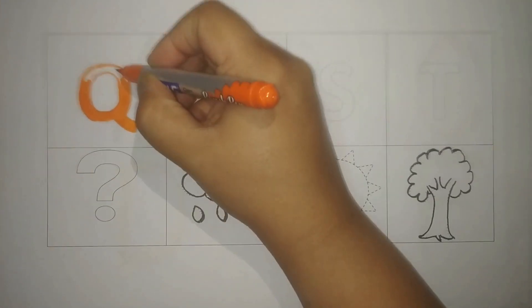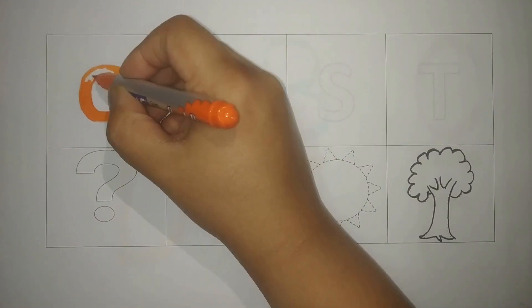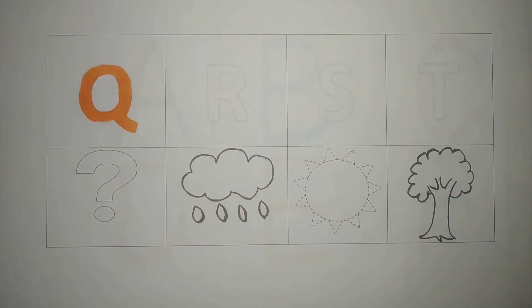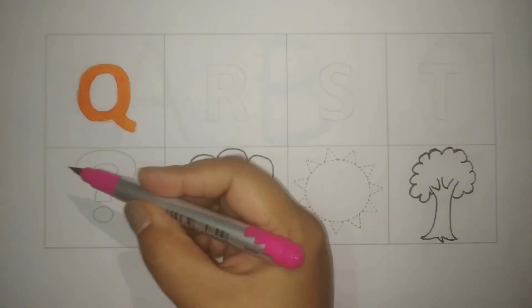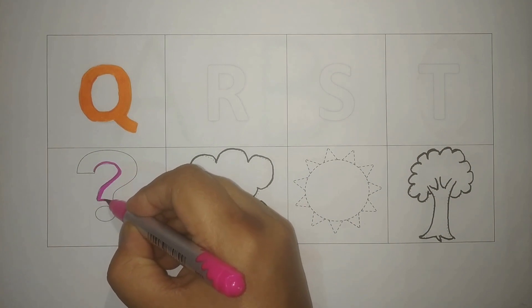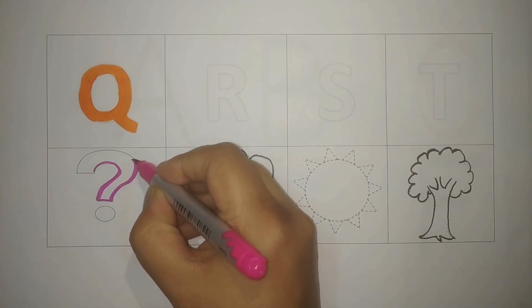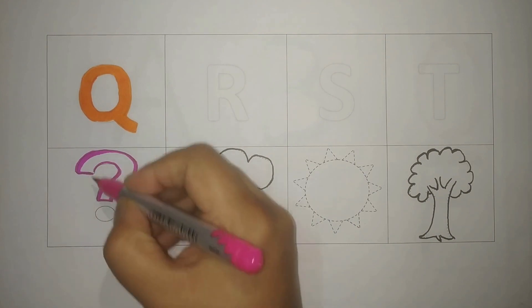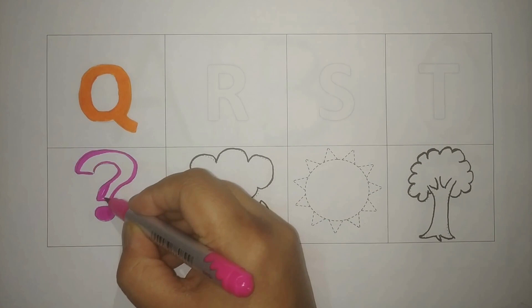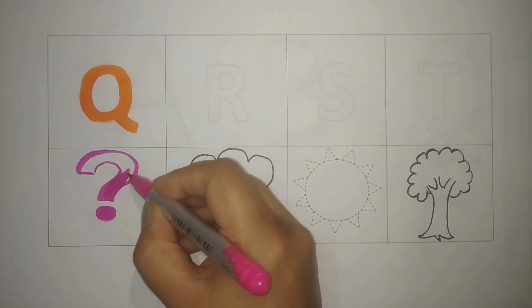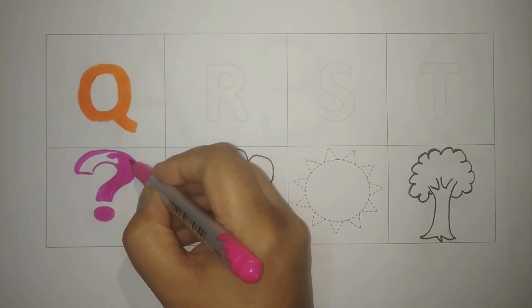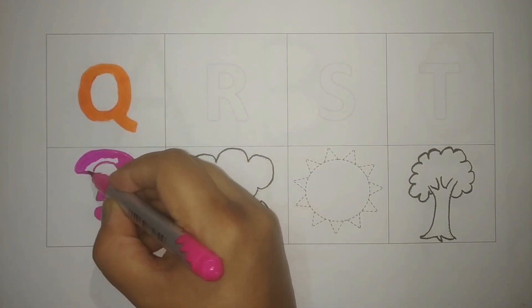Orange color, Q for question mark. Pink color, Q for question mark, Q for queen, Q for quilt. Pink color.